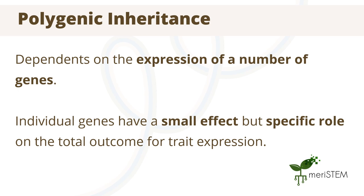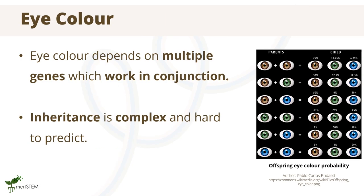Polygenic inheritance refers to the inheritance of a trait being dependent on the expression of multiple different genes. Each gene has a small effect on the total outcome for the trait expression, but each also has a specific role. Eye color is an example of polygenic inheritance, as it depends on the expression of more than one gene. The different alleles work together to influence the melanin level produced within the outer layer of the iris, which impacts the eye color expressed.